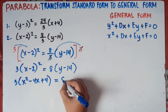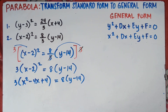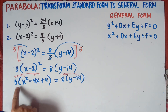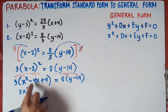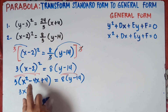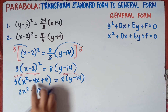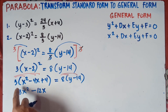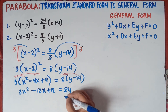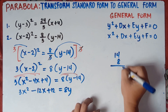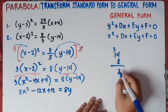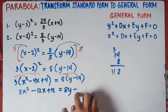Now copy 8(y − 14) on the right side and distribute both sides. Using the distributive property: 3 times x² = 3x²; 3 times −4x = −12x; 3 times 4 = +12. On the right: 8 times y = 8y; 8 times −14 = −112. So we have: 3x² − 12x + 12 = 8y − 112.